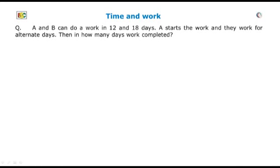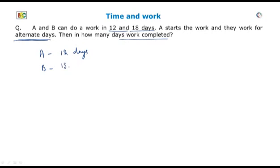The question is: A and B can do a work in 12 and 18 days respectively. A starts the work and they work on alternate days. Then in how many days is the work completed? It is given that A can do the work in 12 days and B can do the same work in 18 days.